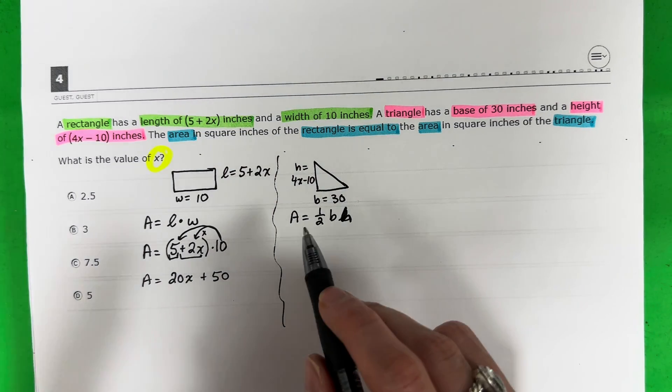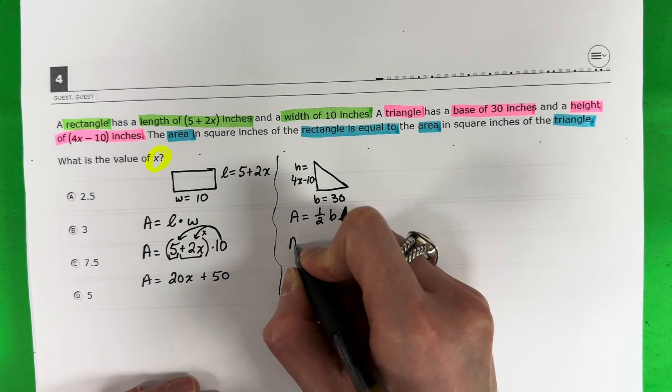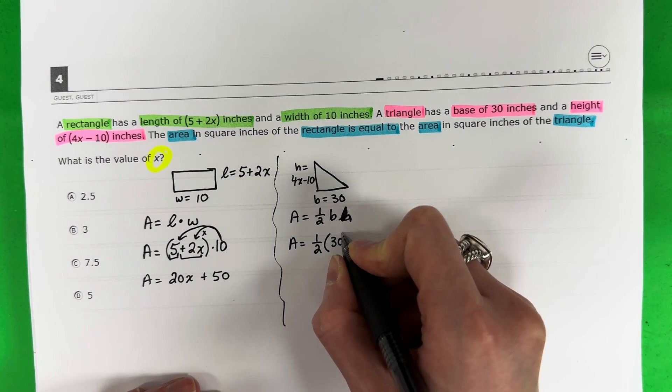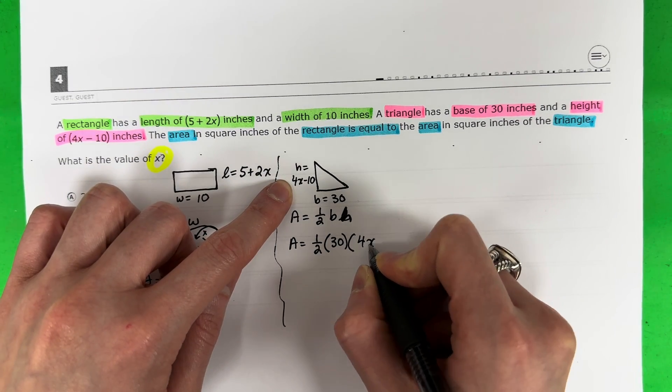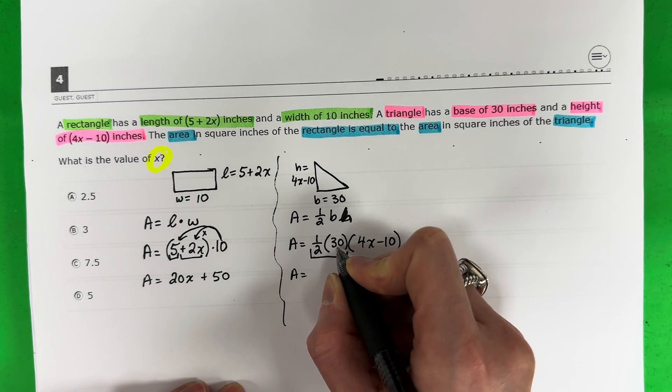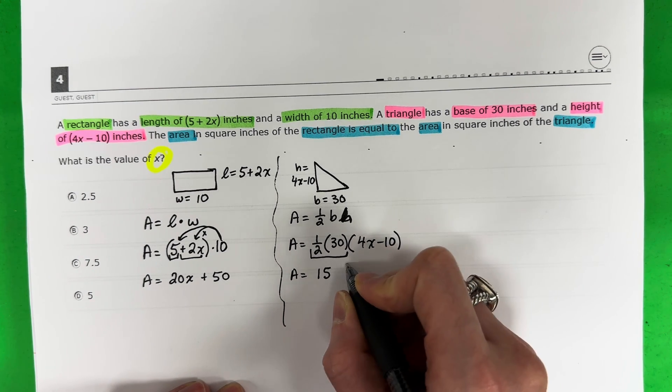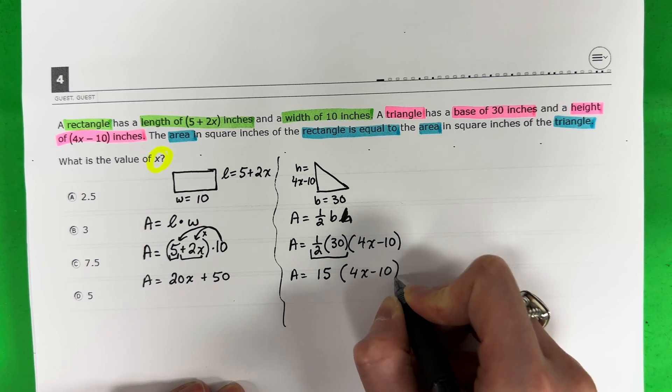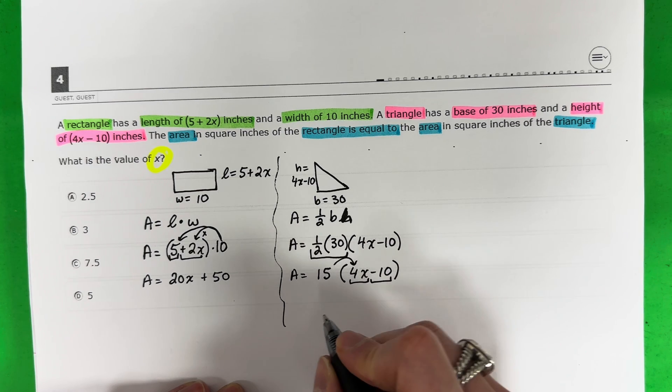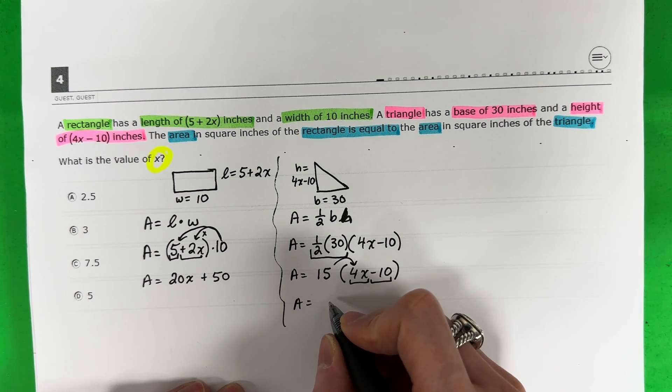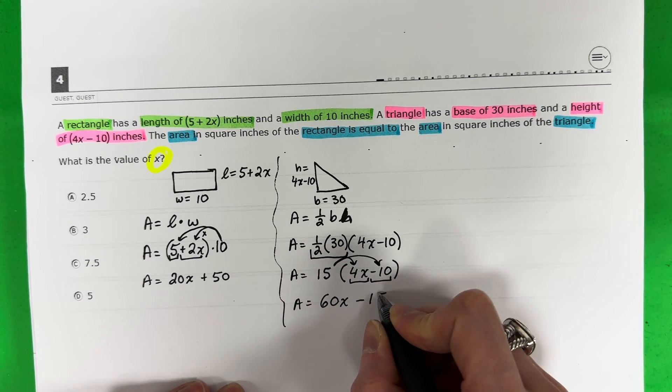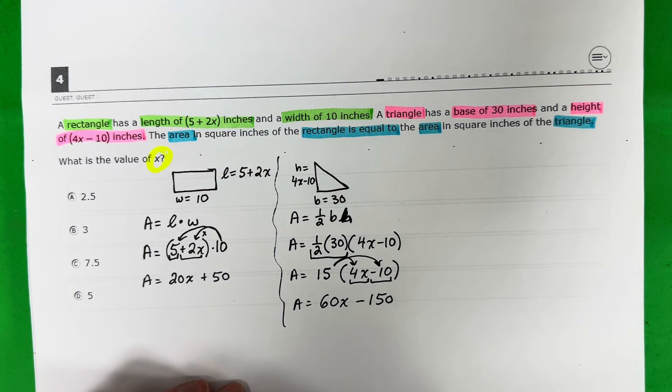Let's go ahead and do the area for the triangle now. Area equals 1 half times base, which is 30, times the height, which is 4x minus 10. Area equals, the first two first, 1 half times 30. Half of 30 is 15, parenthesis copy, 4x minus 10. Now we can go ahead and distribute. I have 1, 2 parts, parenthesis is multiply. 15 times 4 is 60x. 15 times negative 10 is negative 150. There we go.